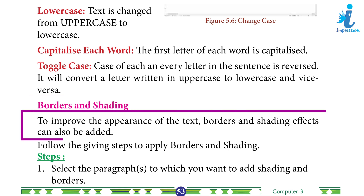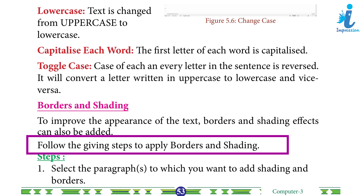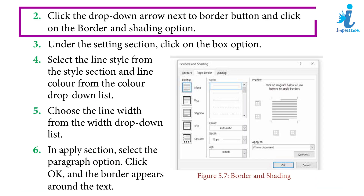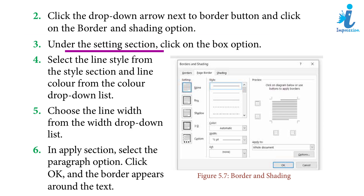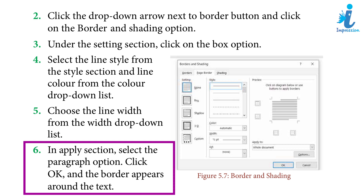Borders and Shading: To improve the appearance of the text, borders and shading effects can also be added. Steps: 1. Select the paragraphs to which you want to add shading and borders. 2. Click the drop-down arrow next to the border button and click on Border and Shading options. 3. Under the Setting section, click on the Box option. 4. Select the line style from the Style section and line color from the Color drop-down list. 5. Choose the line width from the Width drop-down list. 6. In the Apply section, select the Paragraph option, click OK and the border appears around the text.